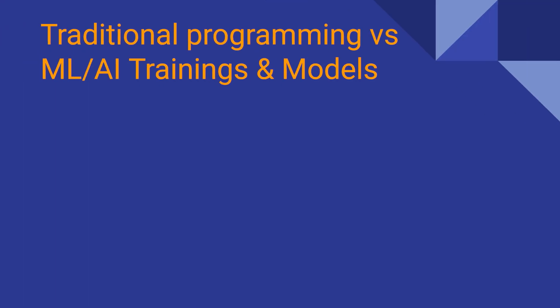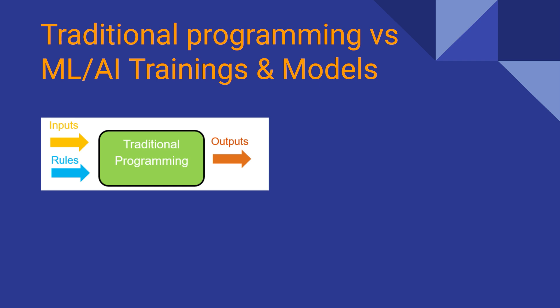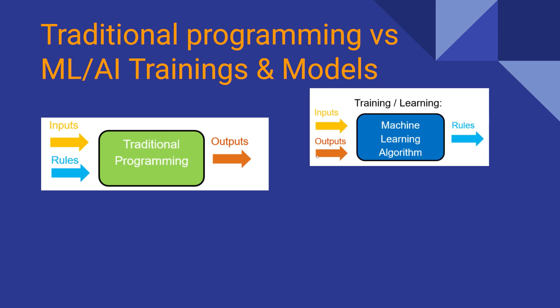Traditional programming versus ML and AI programming. Traditionally, a programmer provides input logic and business rules along with data to get an output. In machine learning, however, you provide inputs and outputs, and the machine learns the rules.